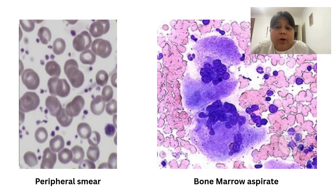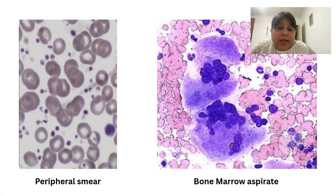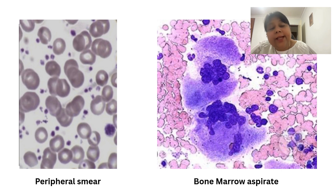This peripheral smear is from one of the patients with essential thrombocytemia, where you can appreciate there is an increased number of platelets. This is the bone marrow aspirate of that patient, which shows an increased number of megakaryocytes with hyperlobulation. You can also note that these megakaryocytes are very large and hyperlobulated.